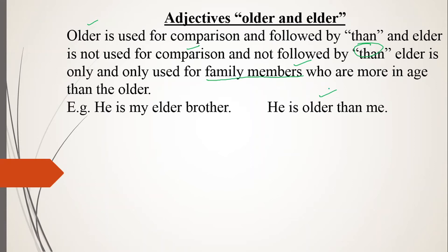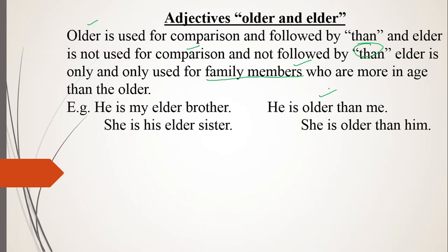Most of the time students say 'he is elder than me,' but this should not be used for age comparison. We use 'older' followed by 'than.' So we say 'he is older than me.' But simply stating the family relation, we say 'he is my elder brother.'